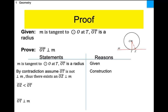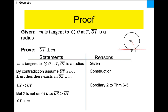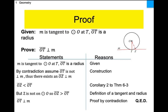OZ has got to be smaller — that's a problem. Because the given says M is tangent at point T. That makes OT a radius. Is OZ a radius? Z is outside the circle — that's our contradiction. Z isn't even on the circle; it's outside the circle. Therefore OZ is not a radius — it's outside, so it's got to be longer. That's our contradiction. Therefore it must be perpendicular. We just proved it is perpendicular, QED. That's the power of proof by contradiction.